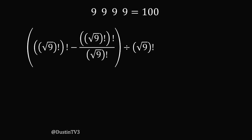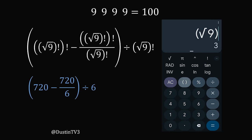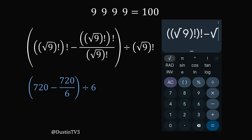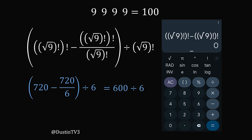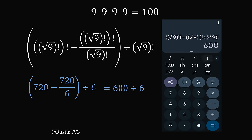Here is another solution. The first part gives 720. We then subtract 720 divided by 3 factorial — that equals 6 — and then divide by 6. This works out to be 720 minus 720 over 6, all divided by 6, which simplifies to 600 divided by 6, which equals 100.